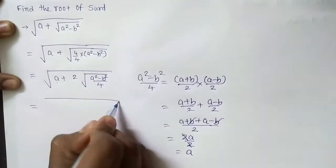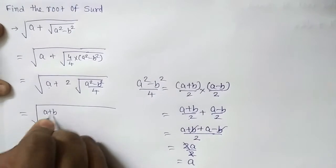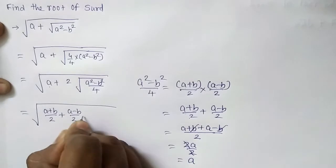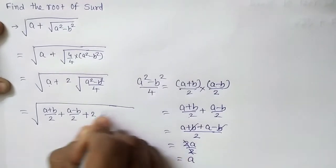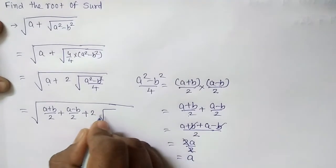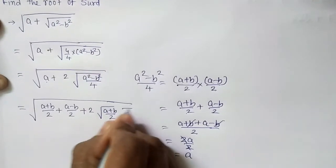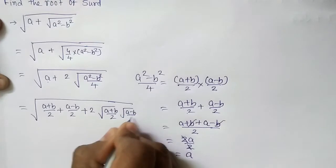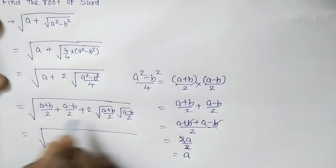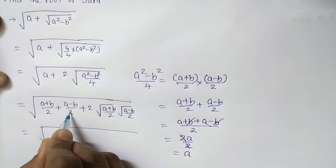As per the format, I should write it: a plus b by 2 plus a minus b by 2 plus 2 into bracket a minus b by 2. If I will rearrange them, then you can see this one plus 2 into this factor into the last factor plus this one.